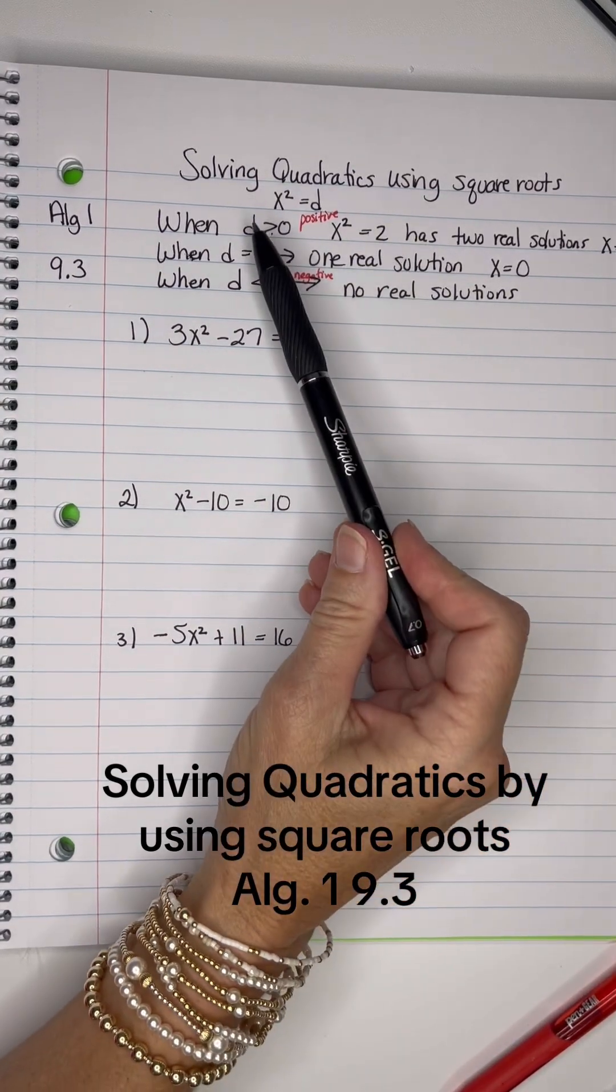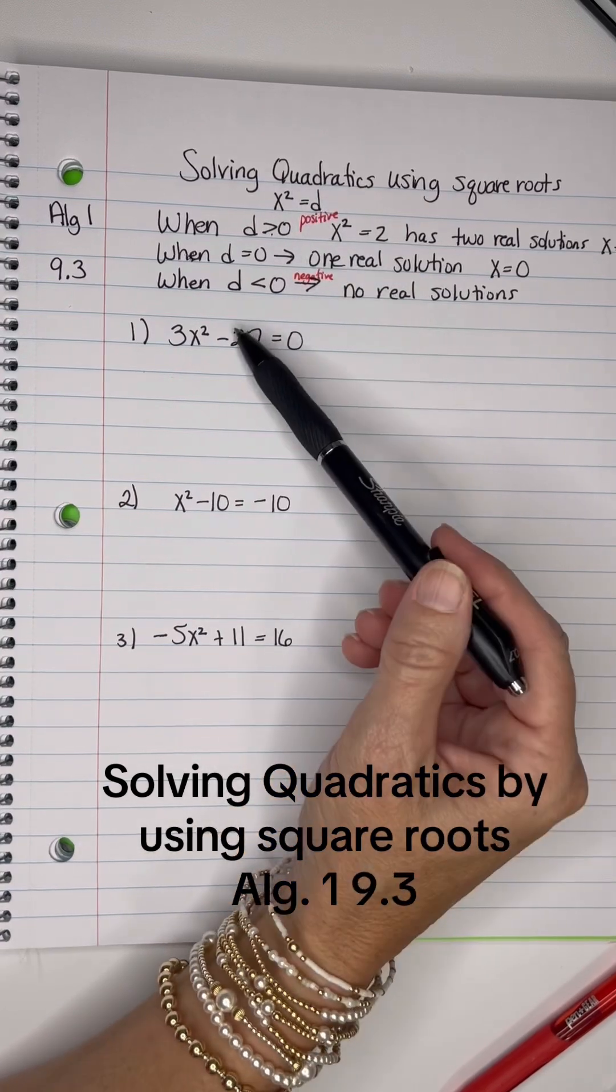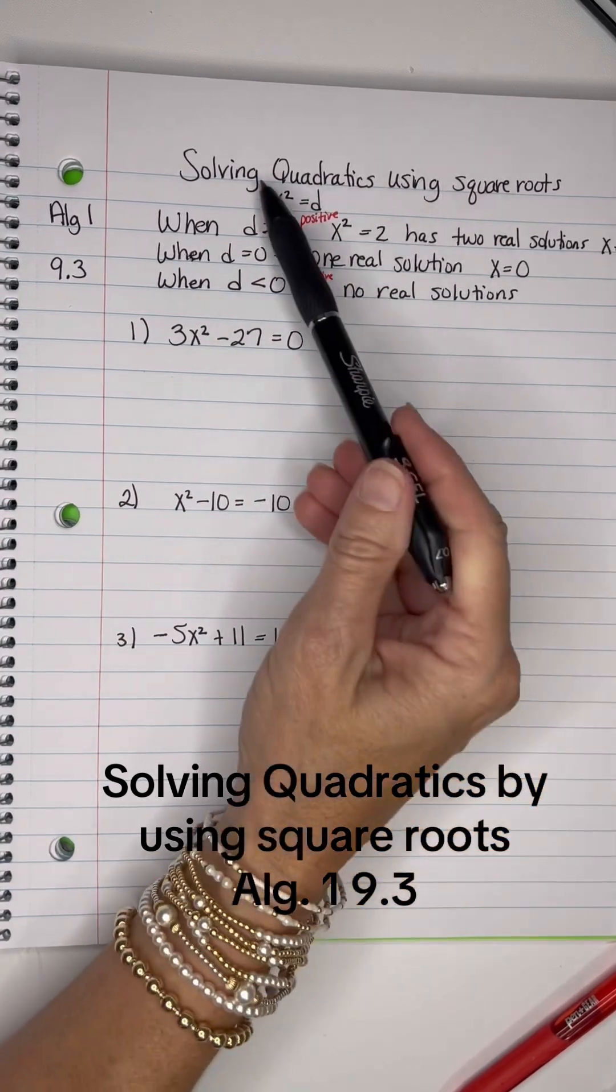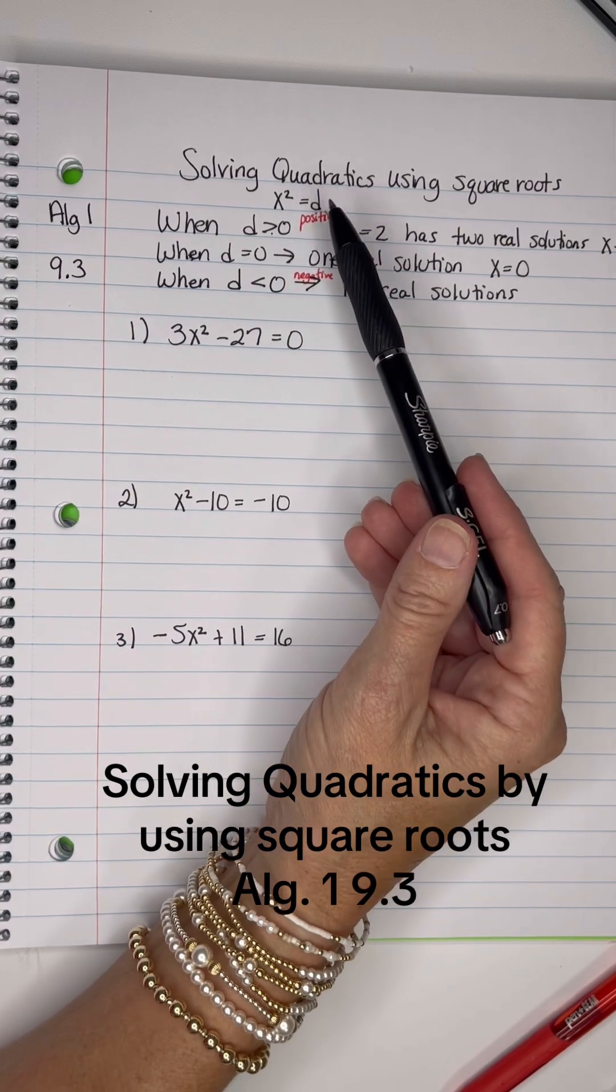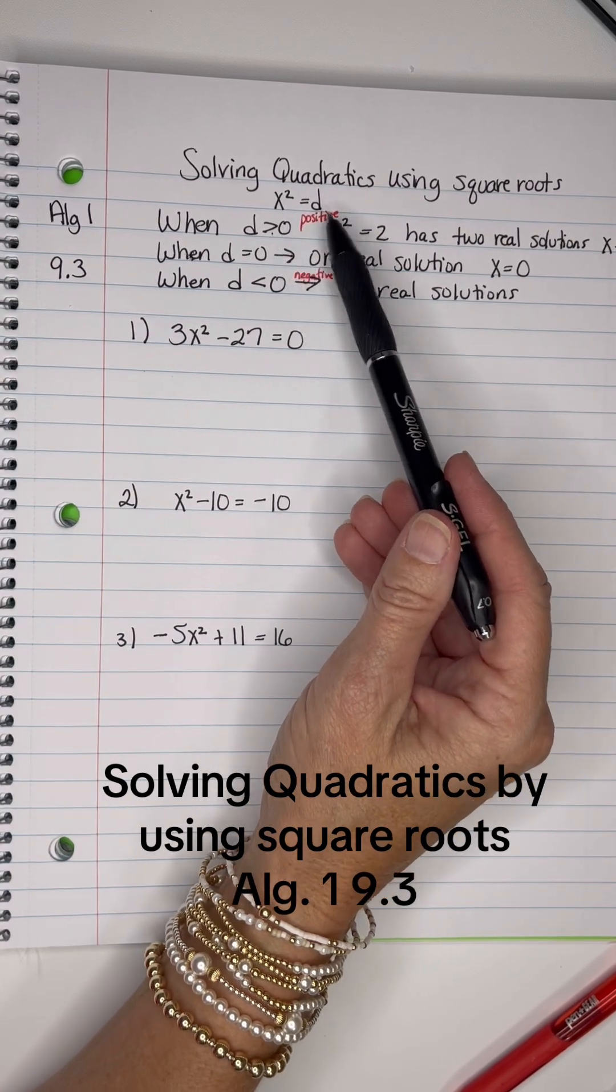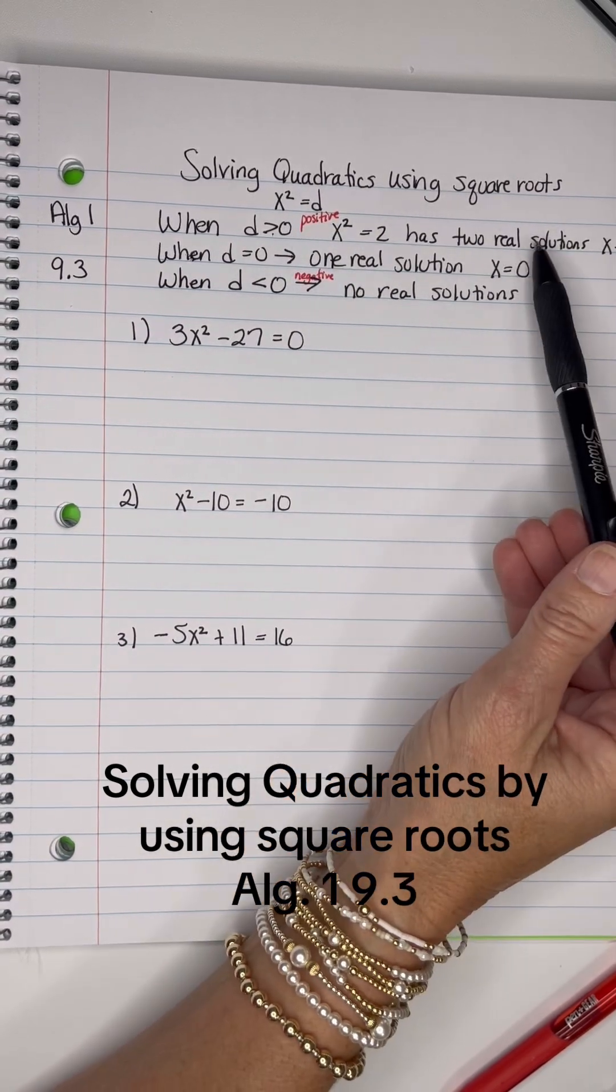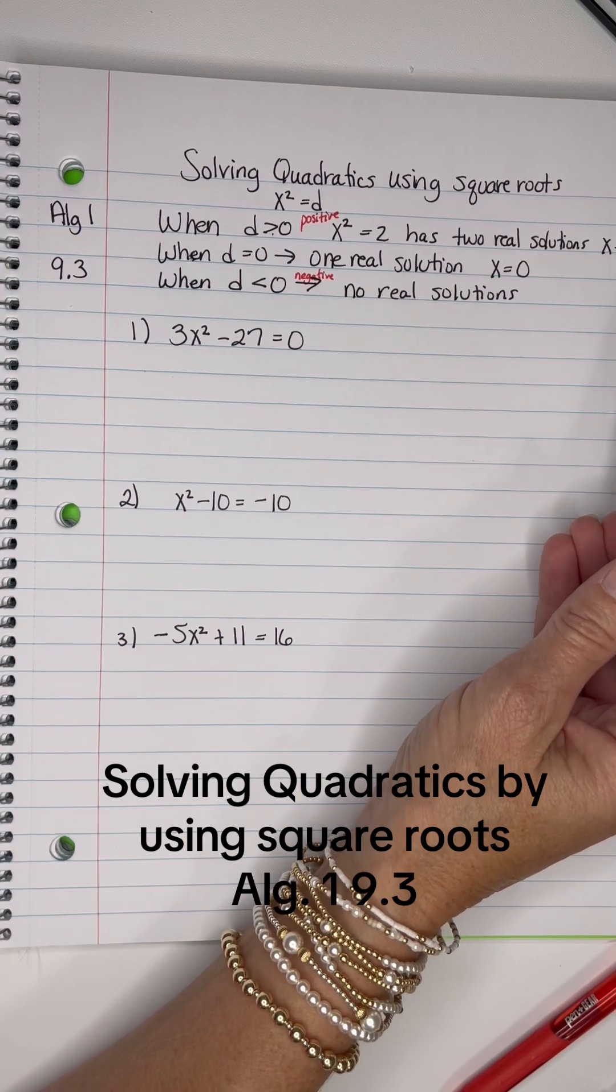If we have x squared equals d, which we want to get these all into that form, where x squared is the only thing left on one side. If it happens to be a positive number, it's going to have two real solutions: positive and negative square root of d.